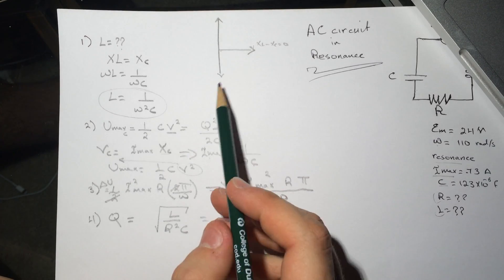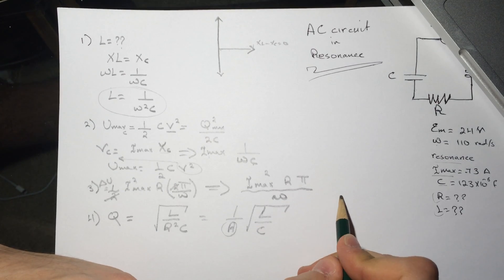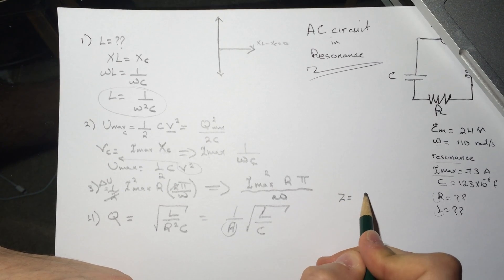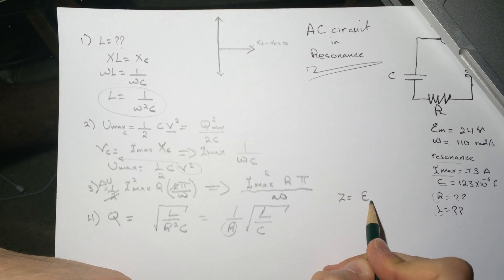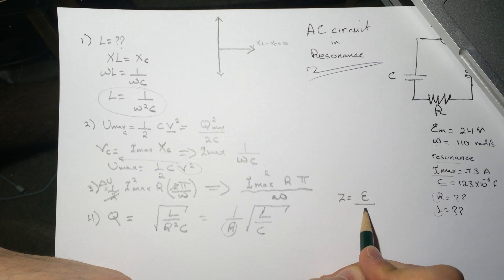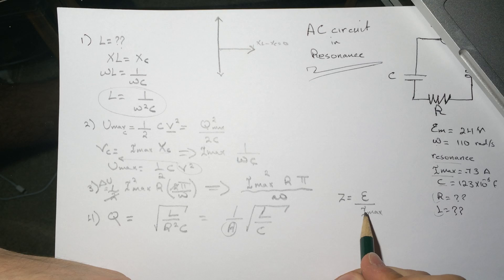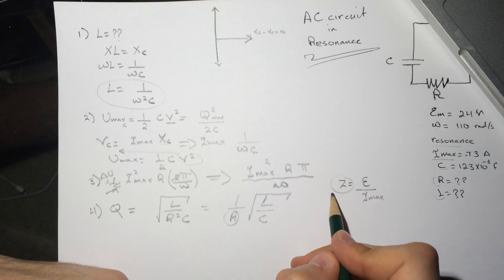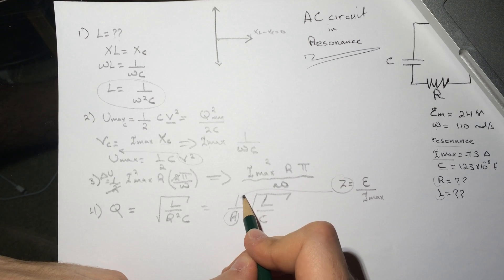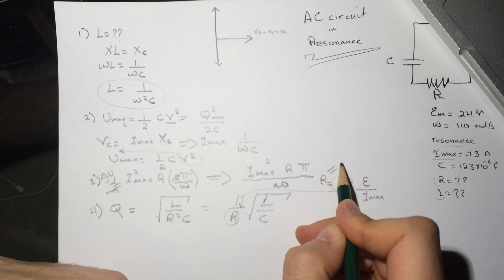We don't have R here, but R is the same as Z because it's in resonance. So Z will be equal to R. How do we find Z? Z will be the voltage of the generator divided by Imax. So plug in this value for R.